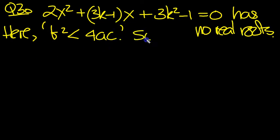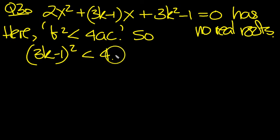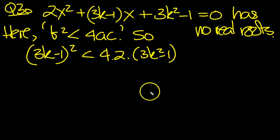So what does that mean? b² is the coefficient of x squared, so that squared must be less than 4 times the 2, which is a, times c, which has more than one term in the bracket: 3k² - 1.